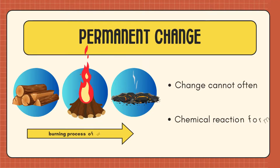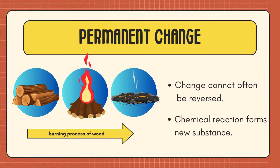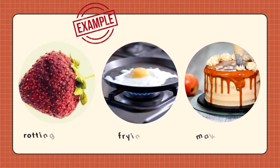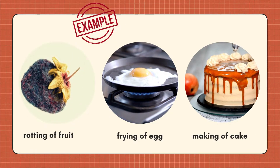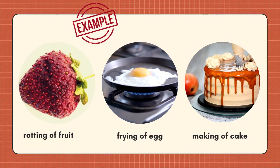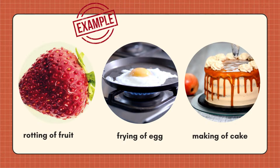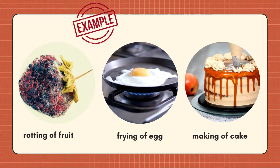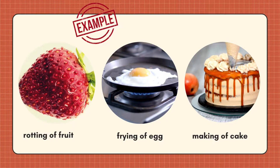Some characteristics of a permanent change are: it is permanent in nature; since the original composition of the substance changes, a chemical reaction forms a new substance. Some examples are rotting of fruits, frying of egg, and making of cake. Forms of energy such as heat, light, or electricity may be emitted or absorbed. A permanent change cannot often be reversed.